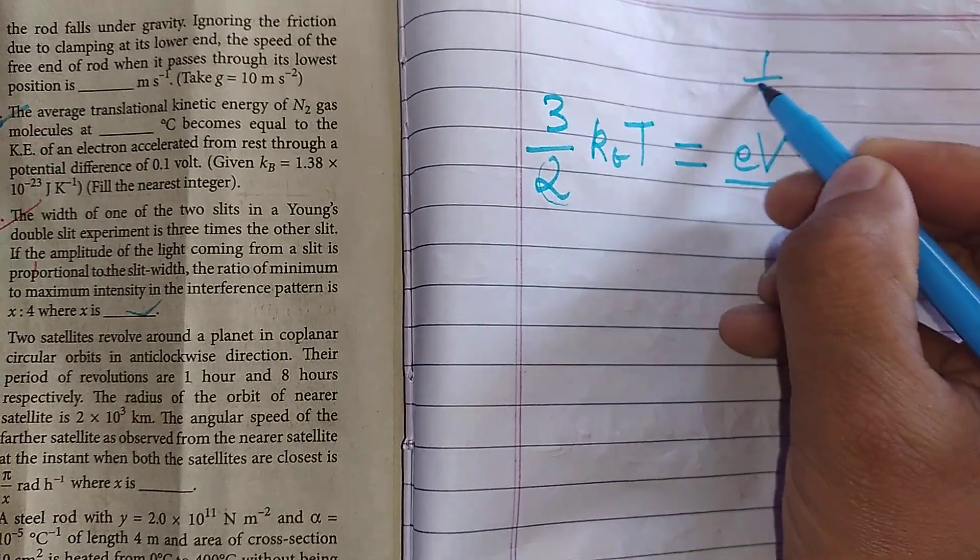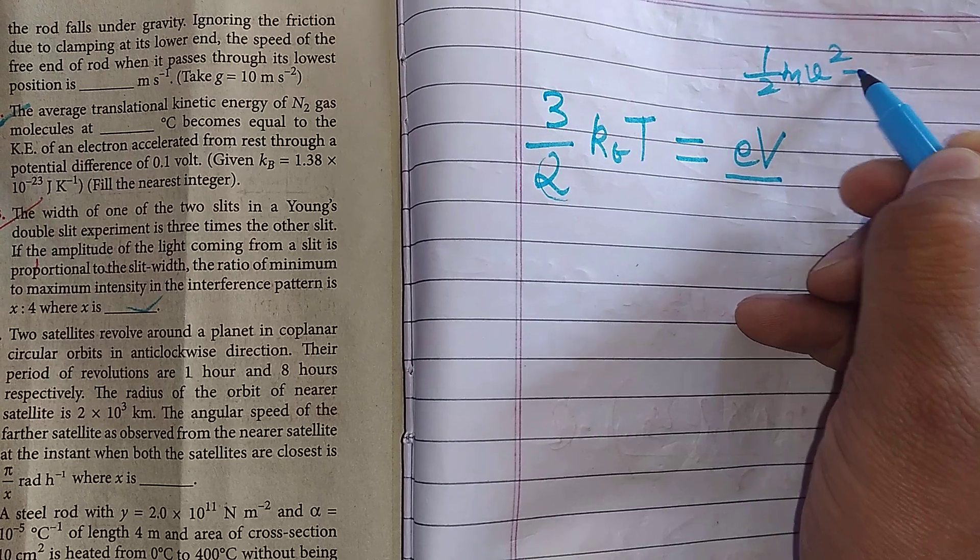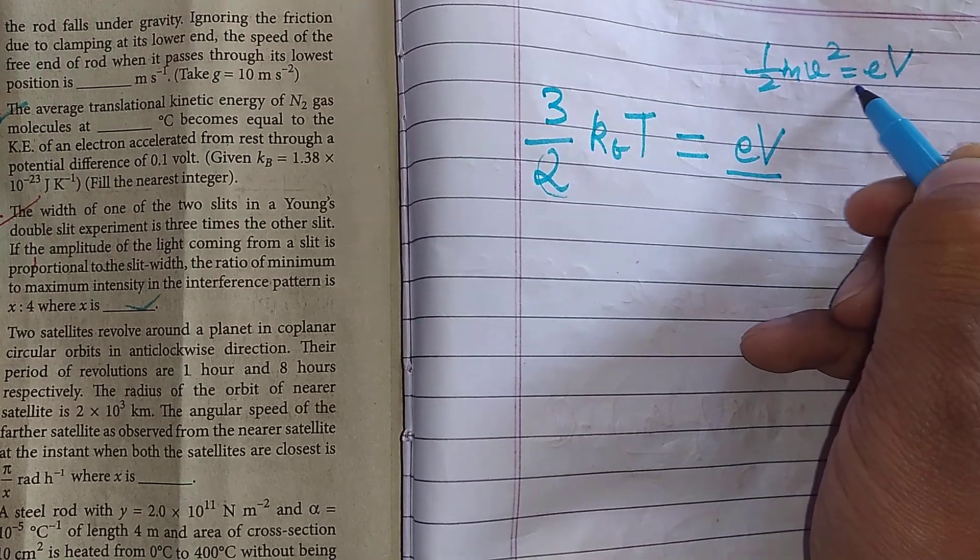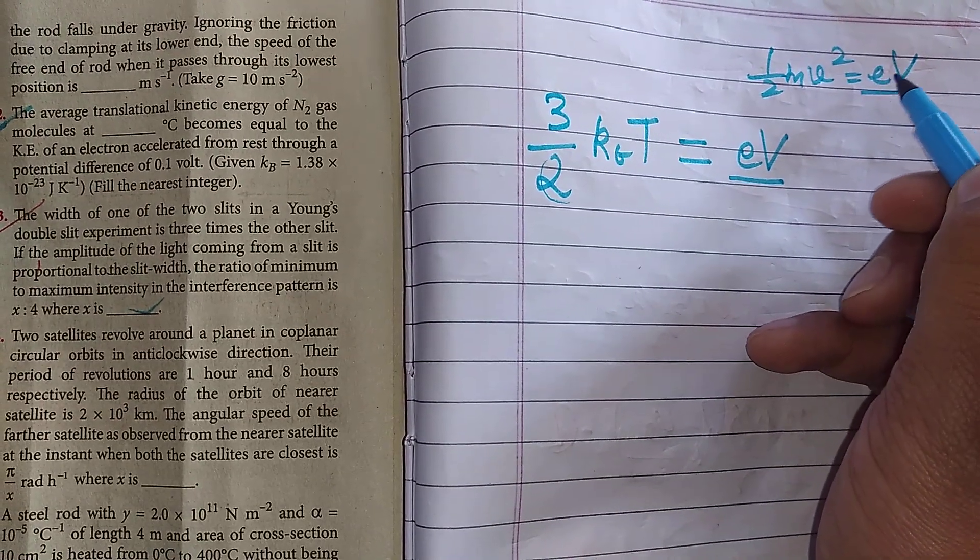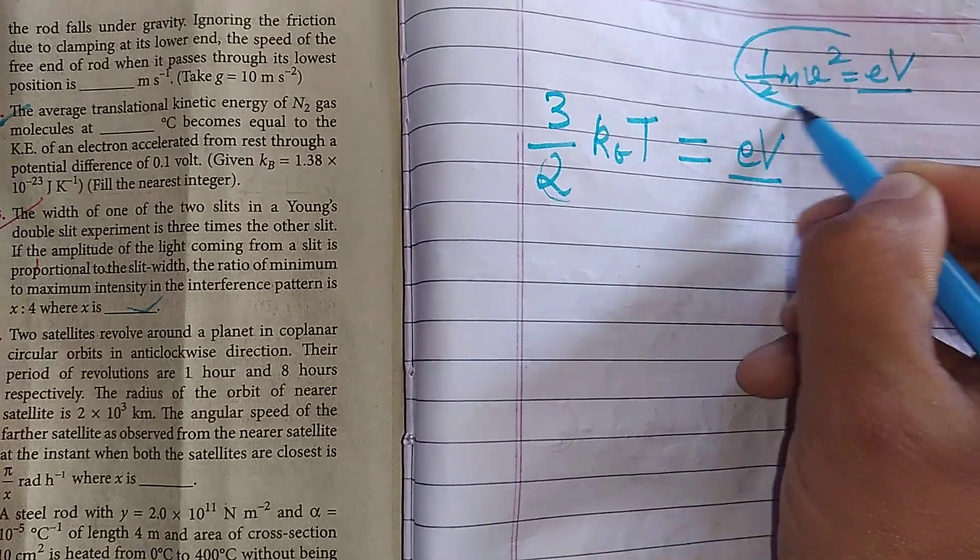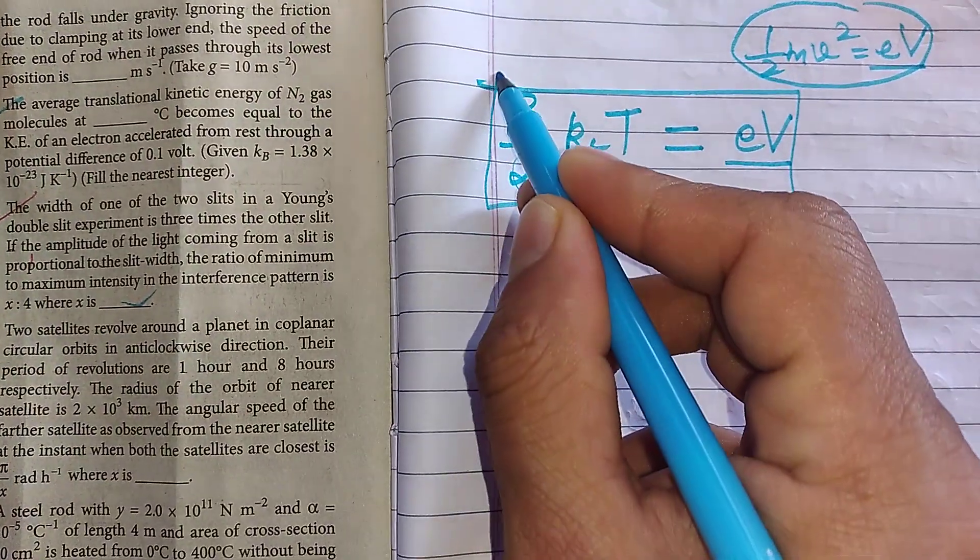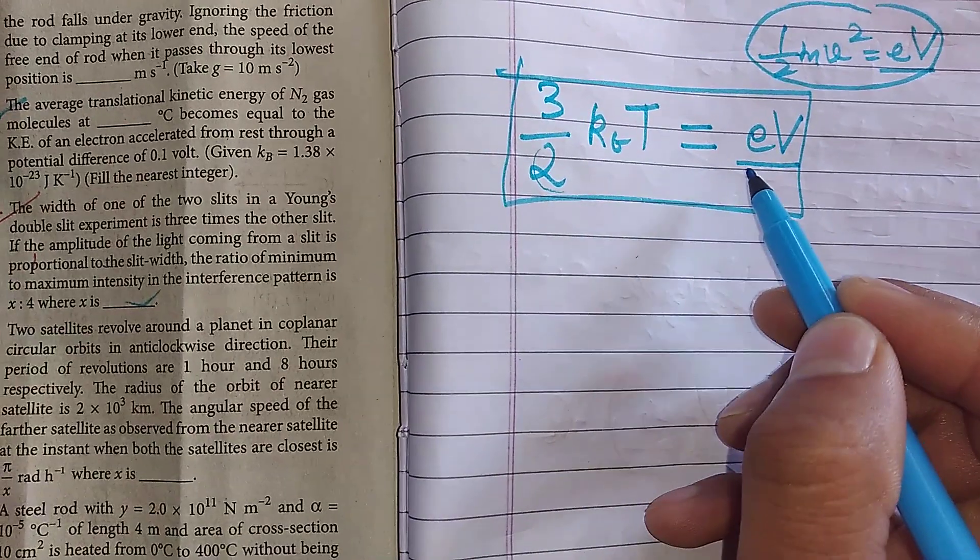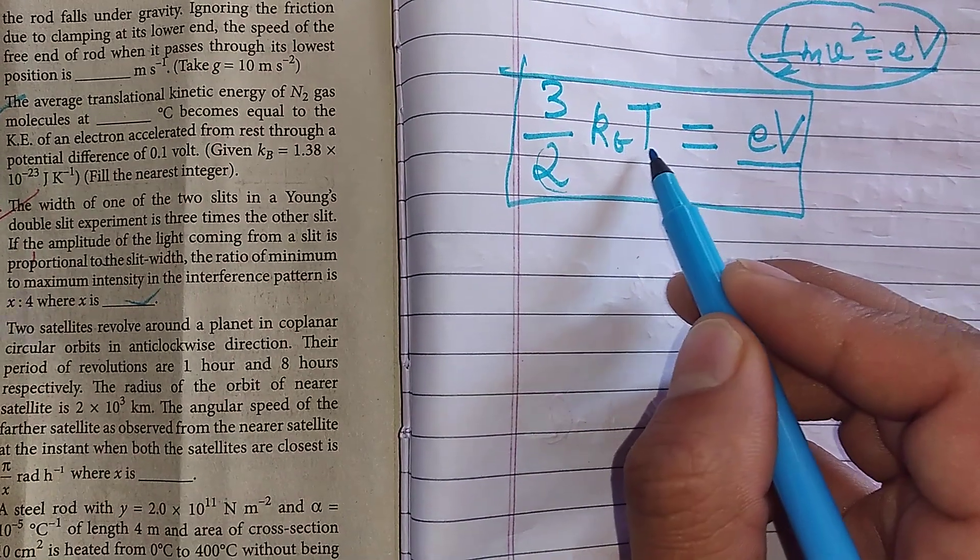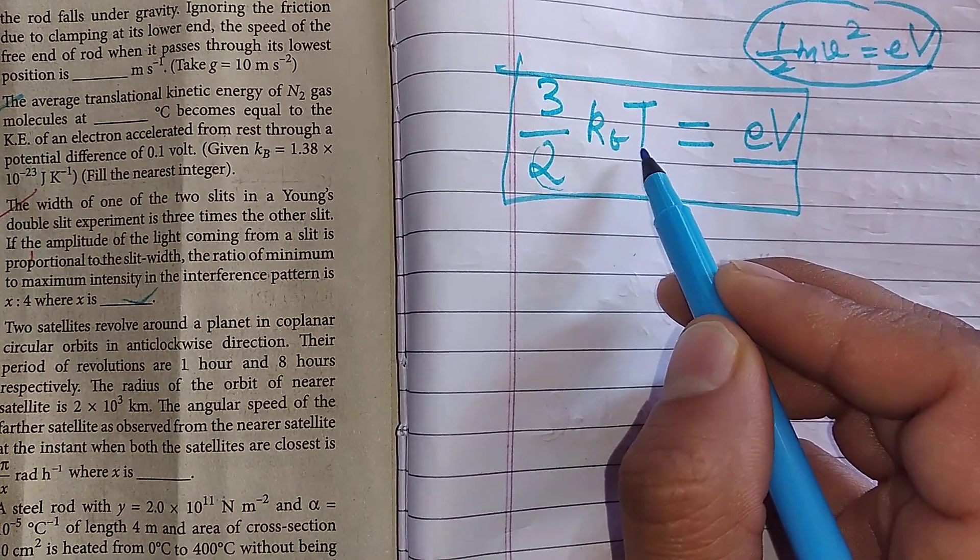Generally, we equate like kinetic energy as half mv squared is equal to e multiplied by V. When we multiply e into potential, it becomes energy there. So according to the given condition problem, 3/2 kBT is equal to eV. And we basically calculate temperature and report our answer in centigrade.